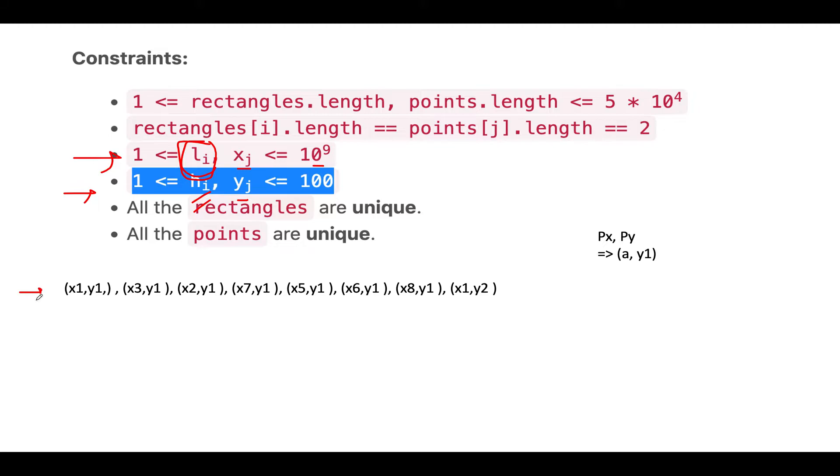Let's walk through that example. Here you can see that the coordinates of rectangles are x1,y1 then we have x3,y1 then we have x2,y1 then we have x7,y1 then we have x5,y1 then we have x6,y1 then we have x8,y1 and in the last we have x1,y2.